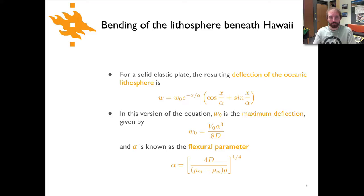Now in the case of a solid elastic plate we can calculate the deflection to look something like this skipping over the derivation for this there's a fair amount of algebra involved but the main point I want you to take away is the difference in the form of this equation and its equivalent for the broken plate. So here we have our deflection w being equal to a term w naught times e to the minus x over alpha times the cosine of x over alpha plus the sine of x over alpha. So there's a few things in here that we haven't seen before one of them being w naught and the second one being alpha.